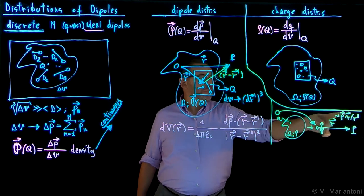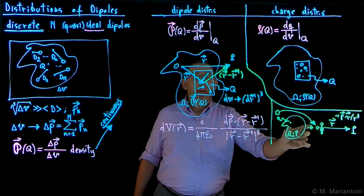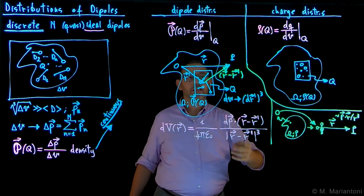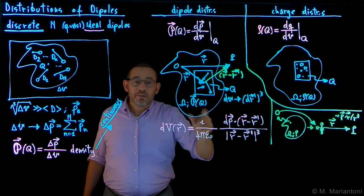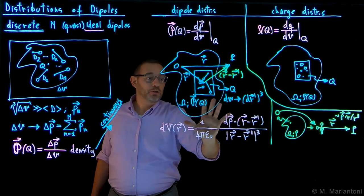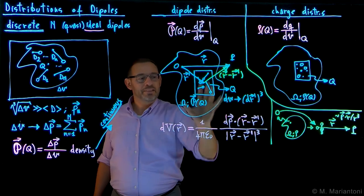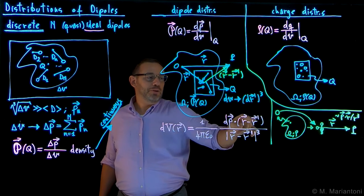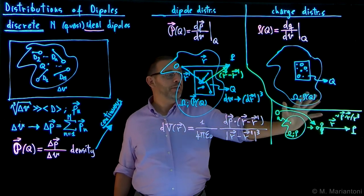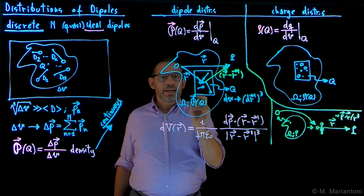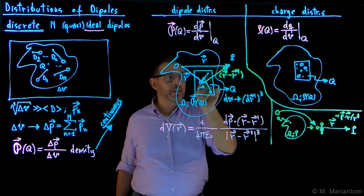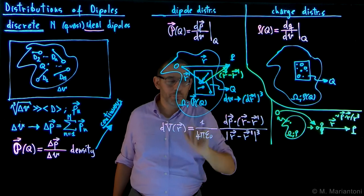For a single dipole we approximated the potential as a function of R, since R prime was very small compared to R. Here we cannot do that — we need to tell exactly where each dipole is located in the region in order to find the potential everywhere, not only far away. Forgetting R prime would be making an approximation of an approximation, which we are not doing. We have a distribution of many dipoles and need to integrate over them exactly.